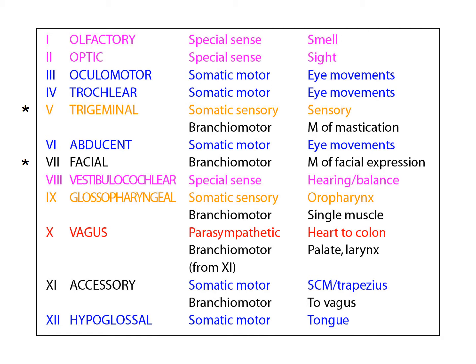The somatic motor nerves are three, the oculomotor; four, the trochlear; six, the abducent; and finally number twelve, the hypoglossal. These nerves all supply somatic muscles and have no sensory components.